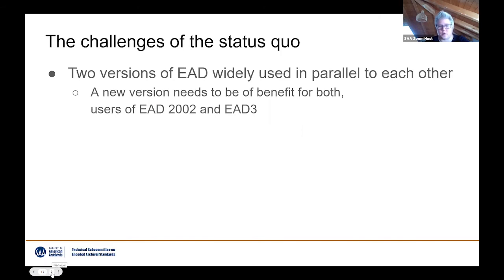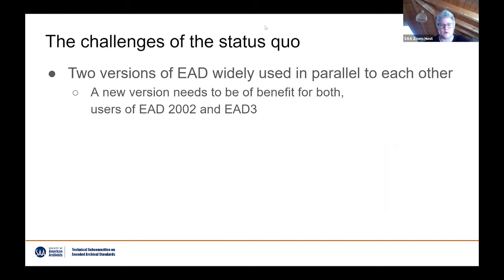What is the status quo we found during the last year? The first thing, and this may be represented in the group here today, is that there are essentially two versions of EAD still widely used in parallel. We have EAD3 as the newest version published in 2015, but we also know that many users are still on EAD 2002. So if we are talking about a revision of EAD, we need to take this into account and ensure a new version has benefits for both EAD 2002 and EAD3 users alike.